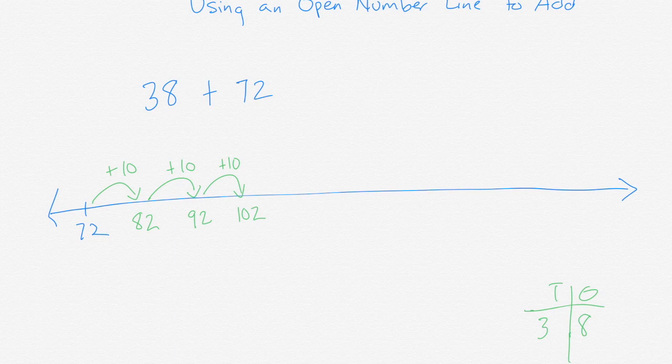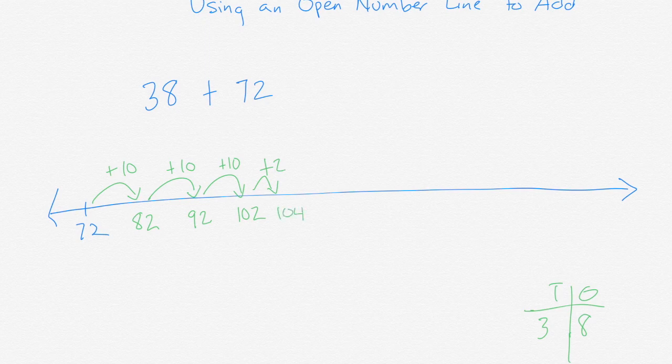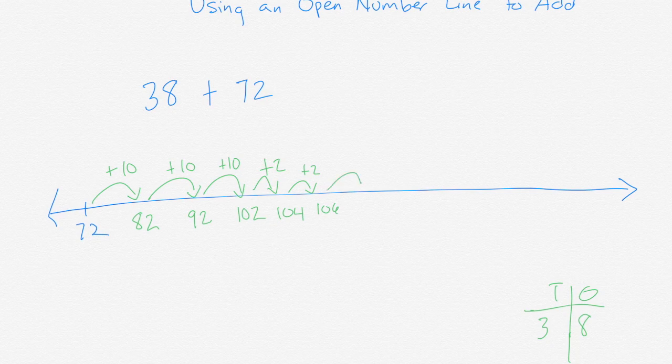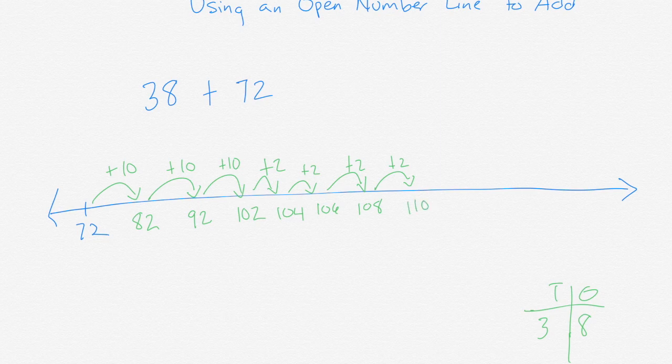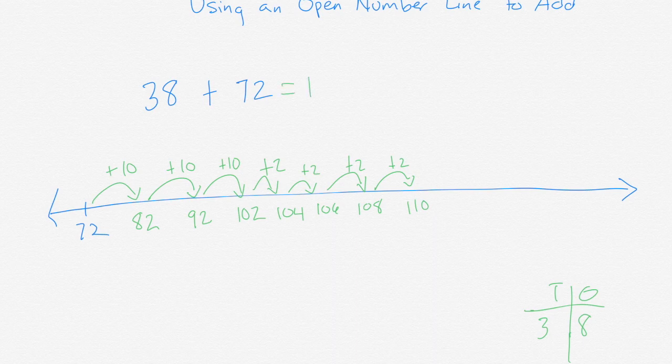So let's say I want to add by twos. So I have plus 2 is 104, 104 plus 2 is 106, 106 plus 2 is 108, 108 plus 2 is 110. So we have solved the problem 38 plus 72 and we know it equals 110.